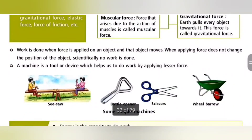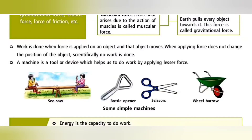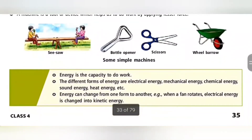Work is done when force is applied on an object and that object moves. When applying force does not change the position of the object, scientifically no work is done. A machine is a tool or device which helps us to do work by applying lesser force. Some examples of simple machines are seesaw, bottle opener, scissors, and wheelbarrow.